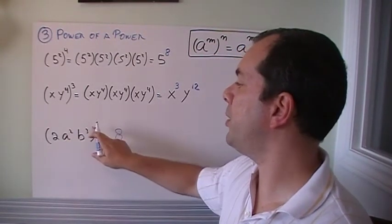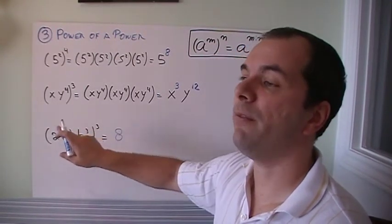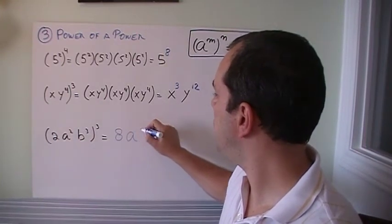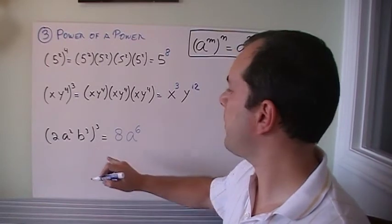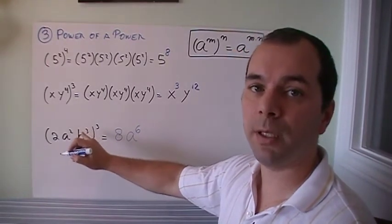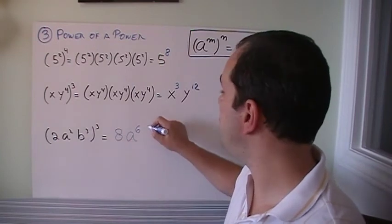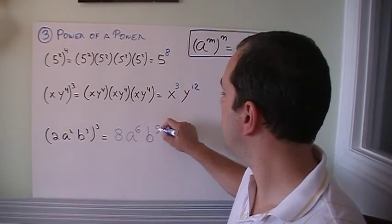A squared to the power of 3, well, that means I'm going to have 2 times 3 is 6. So it's A to the power of 6. And then B to the power of 3 to the power of 3, so I'm going to have 3 times 3, which is B to the power of 9.